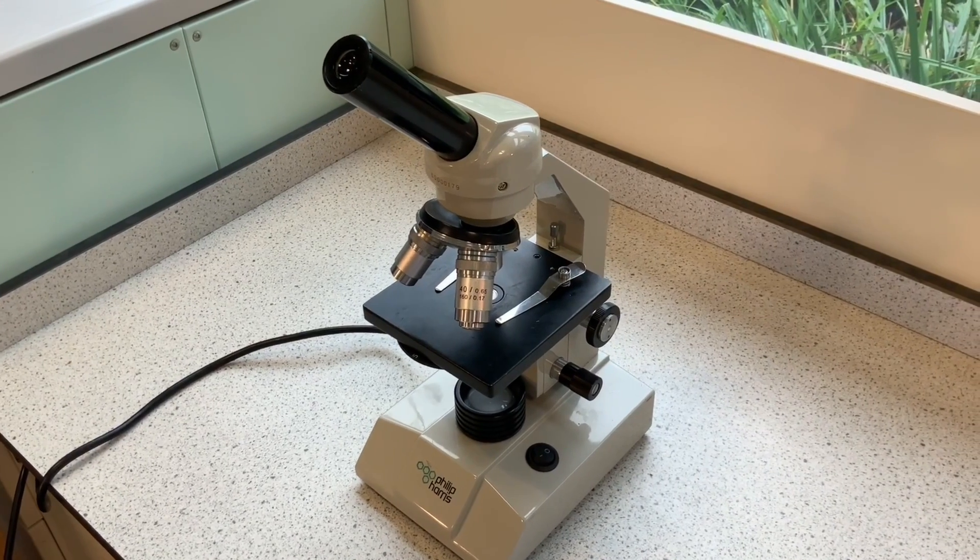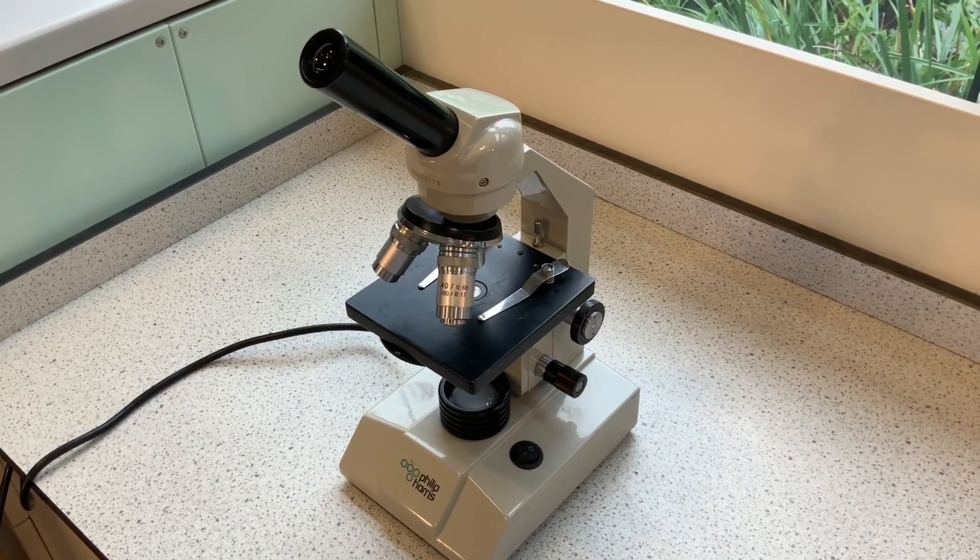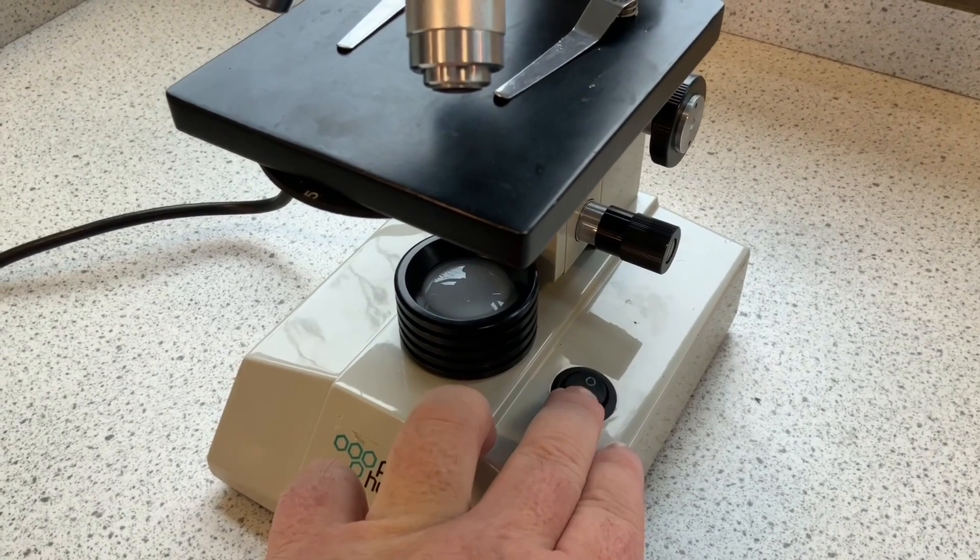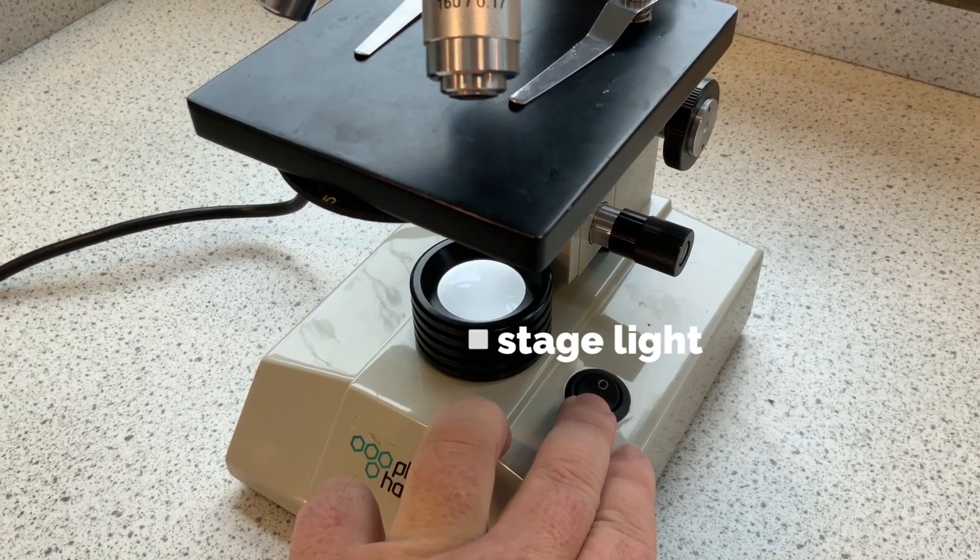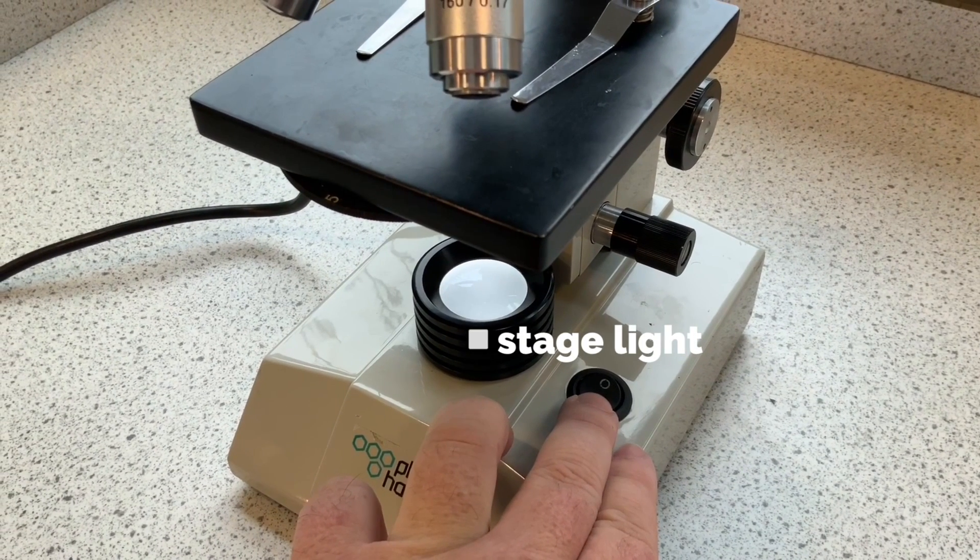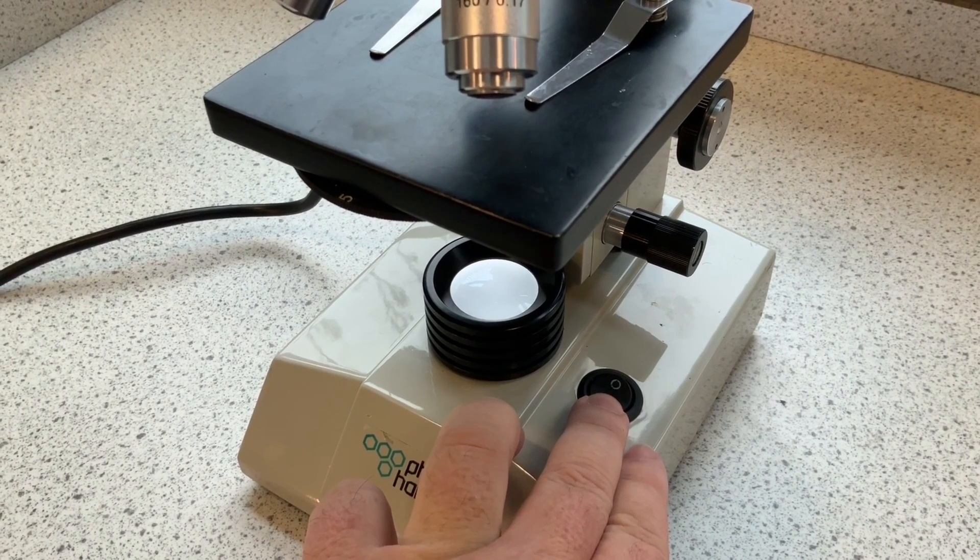The first thing we need to be able to do is to label and use the main parts of a microscope. We start off with the stage light. On some microscopes they have a mirror to focus the light up through the specimen. This one has a proper light.